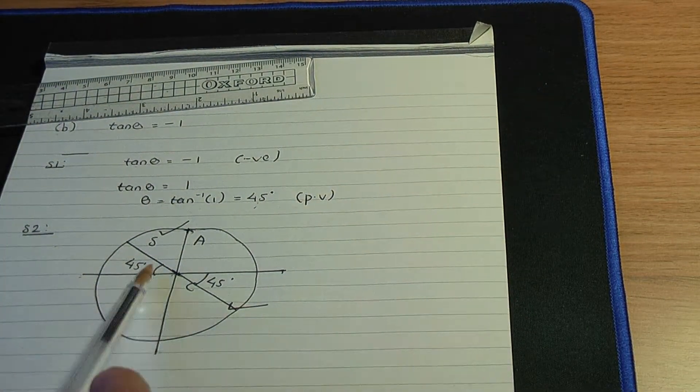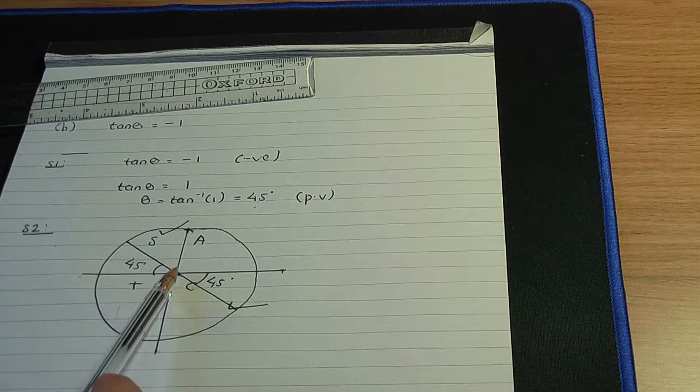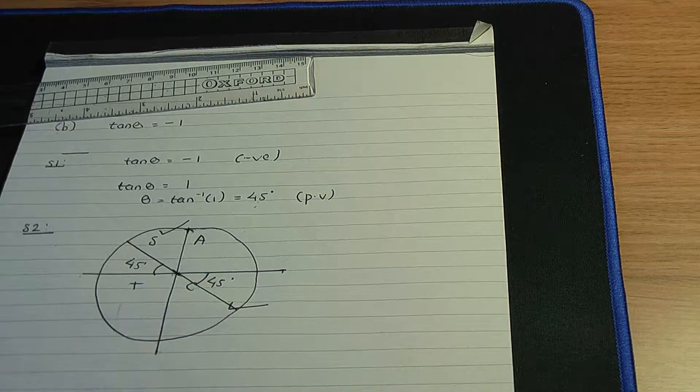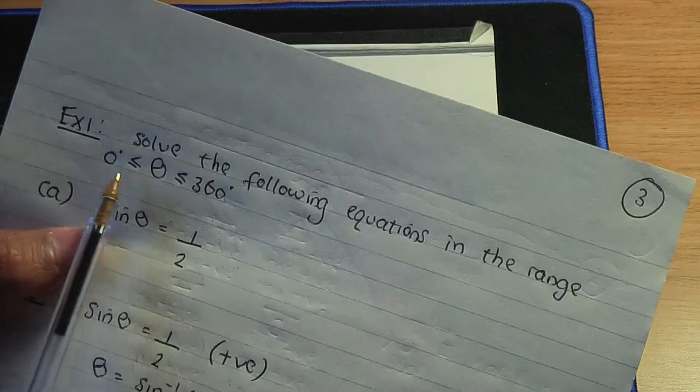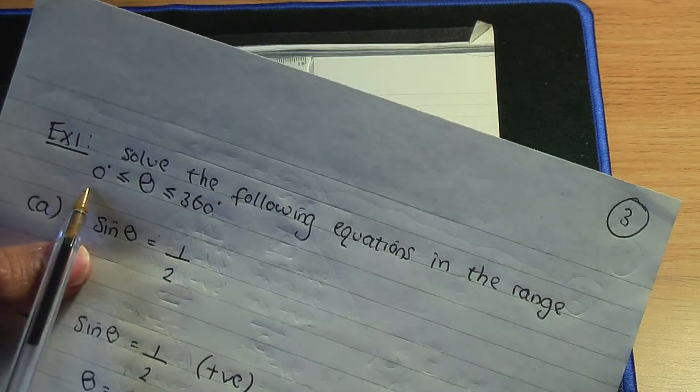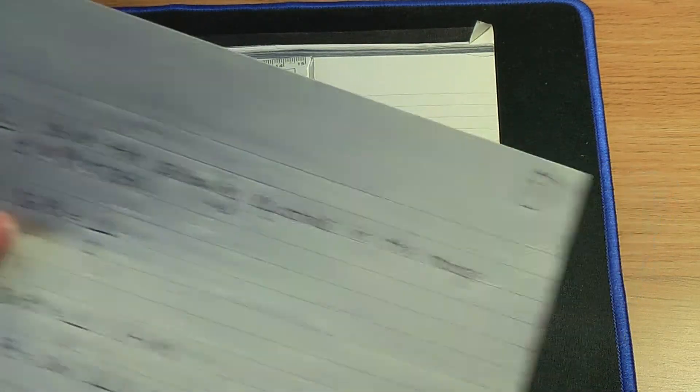So bearing in mind we're looking for angles within our range. So let's go back to the range. So the range is all of the angles theta between 0 and 360 included.